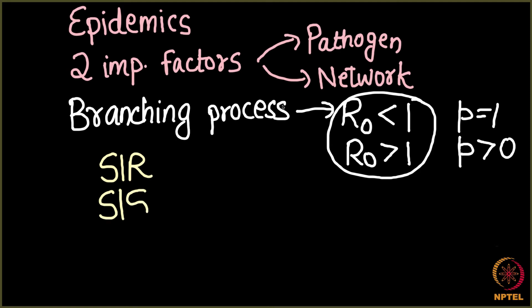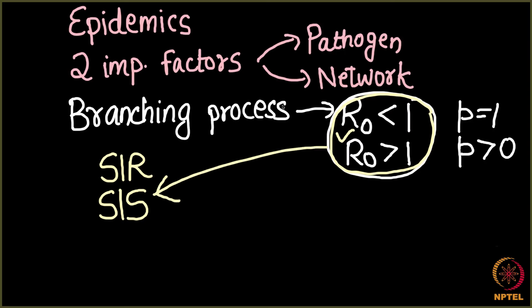Now I pose a question: here we have seen that the reproductive number R0, if less than one, means the disease for sure dies away; if greater than one, it is quite likely that the disease will persist in the network. Does this theory from the branching process hold for the SIR and SIS models? The answer is no. Let's take a small example and figure out why.